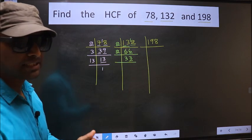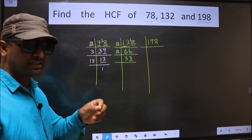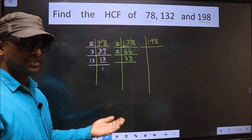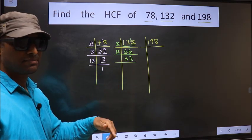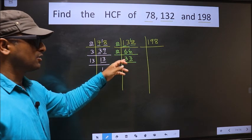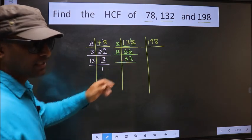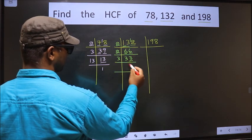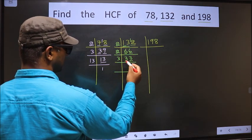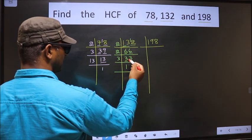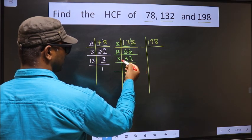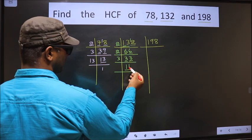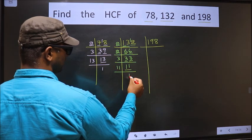To check divisibility by 3, we add the digits: 3 plus 3 is 6. Is 6 divisible by 3? Yes. So this number is also divisible by 3, so we take 3. The first number 3: 3 once is 3. The other number 3: 3 once is 3. Now we got 11. 11 is a prime number, so 11×1 is 11.